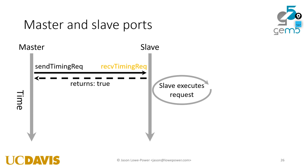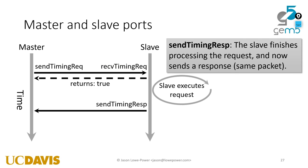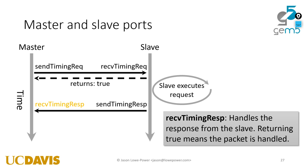Then you execute the request, get the data out of memory, stall for some amount of time, and queue an event sometime in the future. For a really simple memory, you might enqueue an event for 20 nanoseconds in the future. Then the slave calls send timing response, using the same packet to respond. This then calls receive timing response on the master. So the master needs to implement receive timing response.